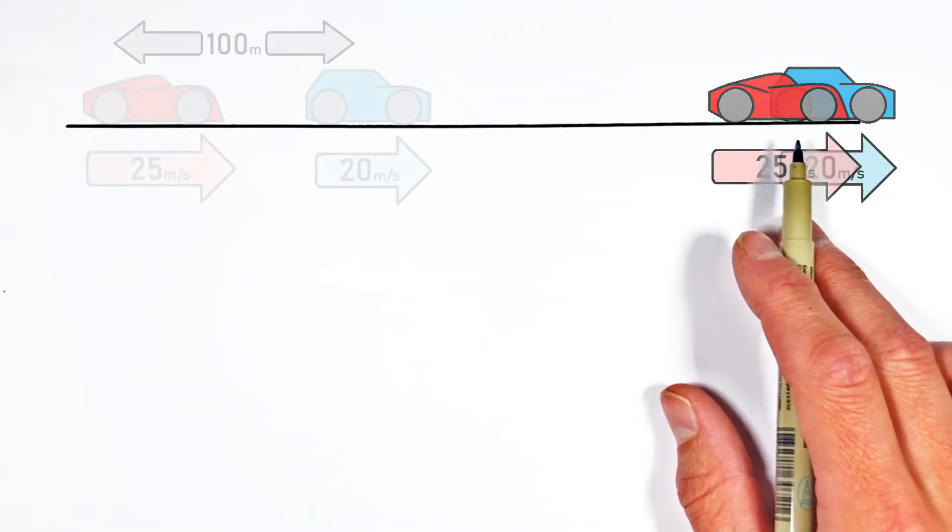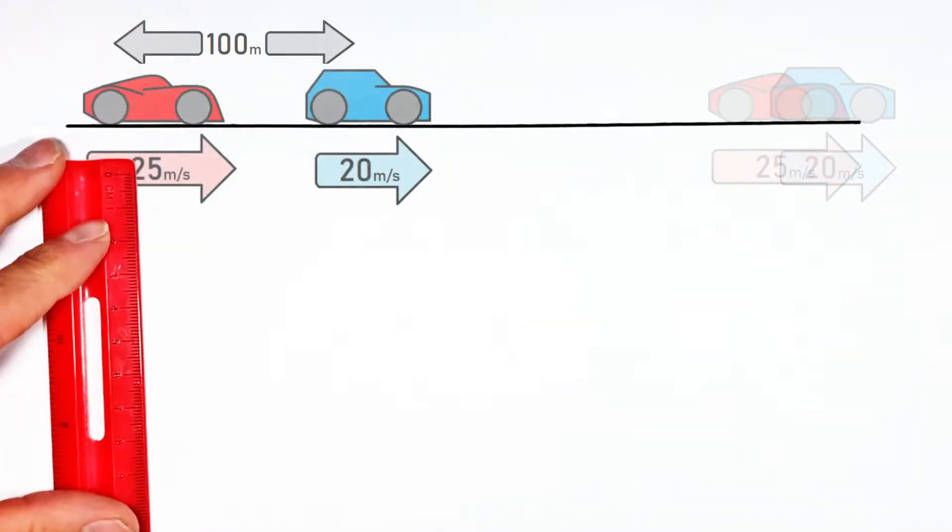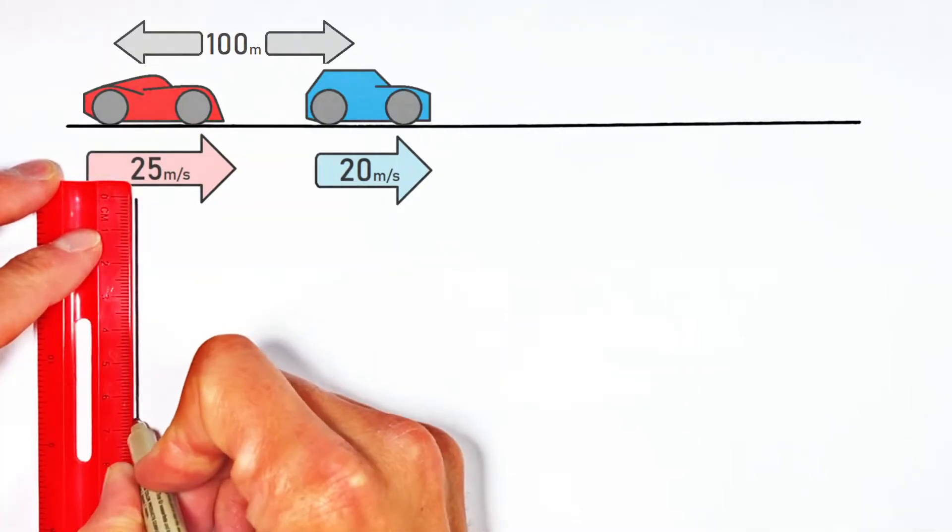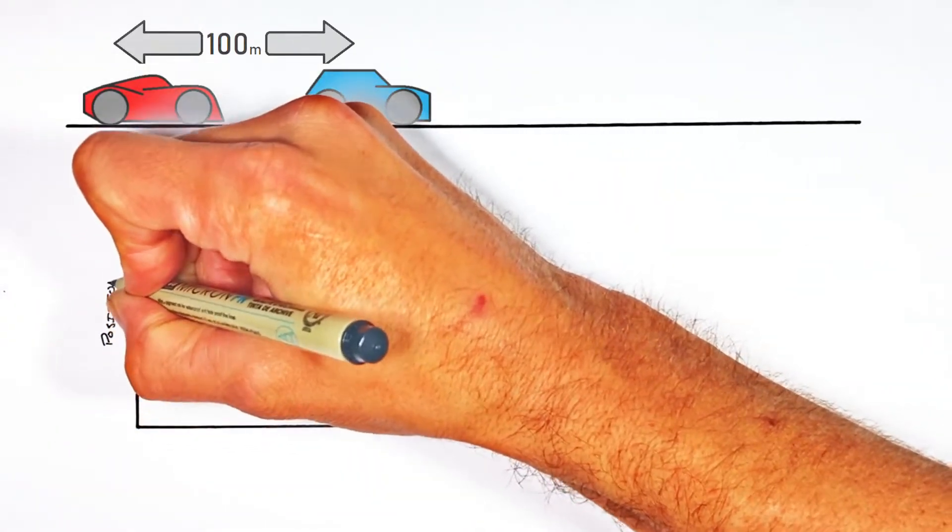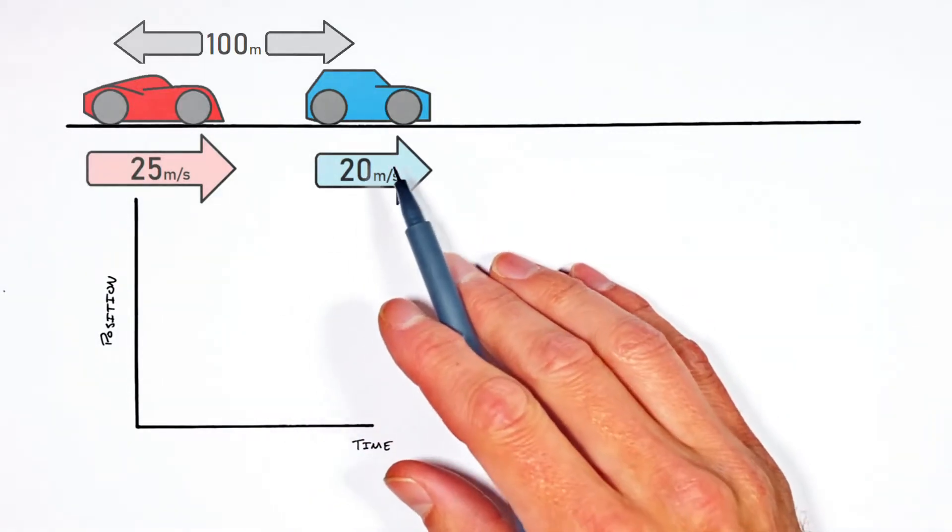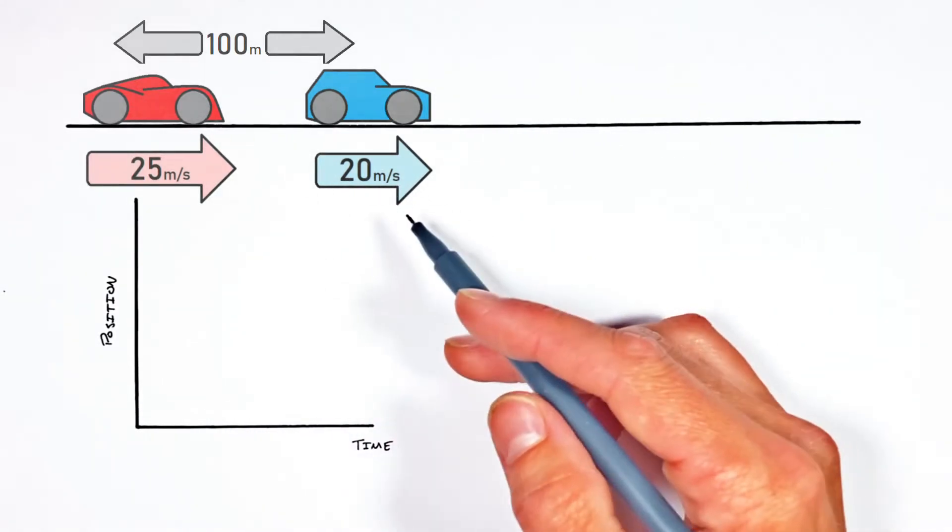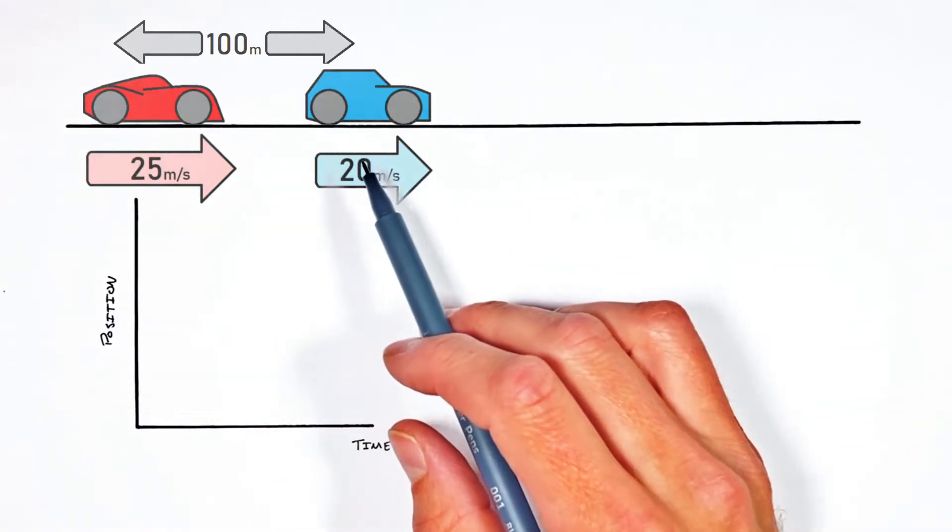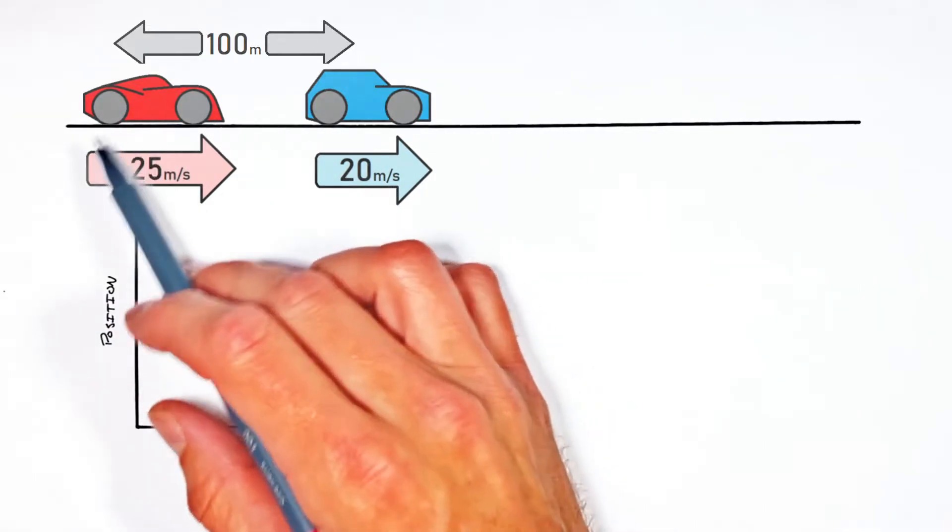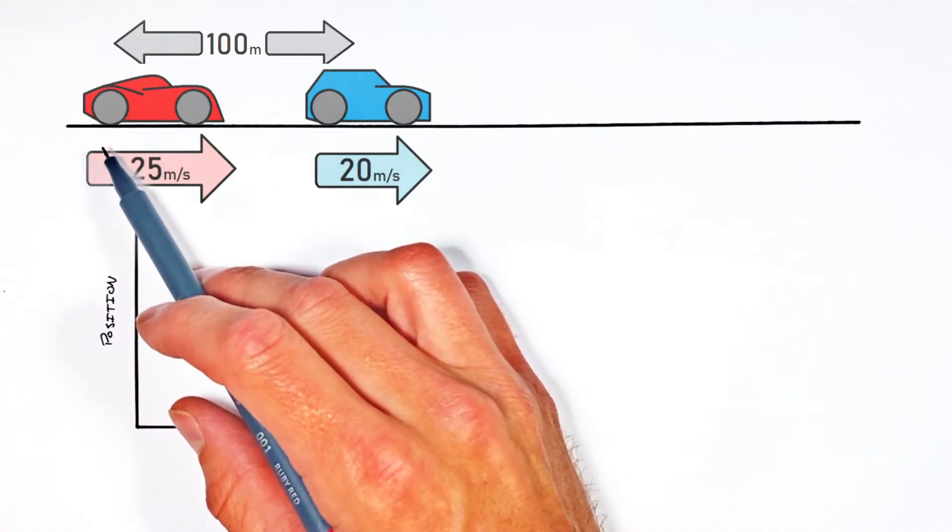Now before we just dive into the math of this problem, let's take a look at a graph which shows the position versus time for each of these cars as they move down the road. And this leads us to a decision that we need to make here which is a bit arbitrary. And that is which car is actually going to start at a position of zero. I'm going to say this faster car in back starts at a position of zero.